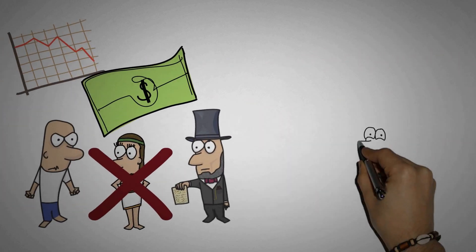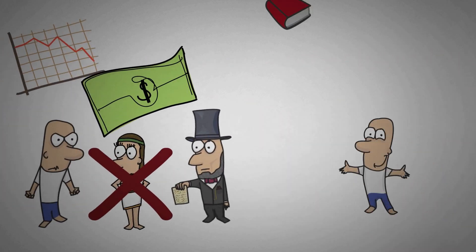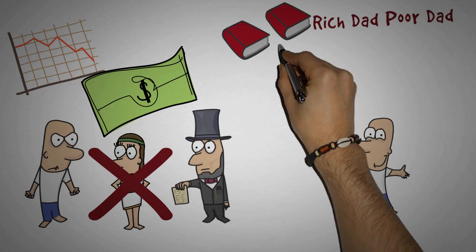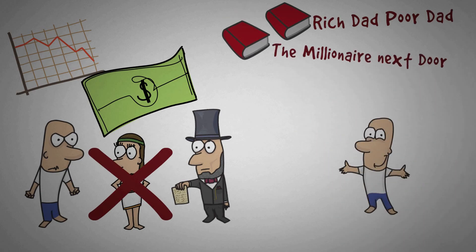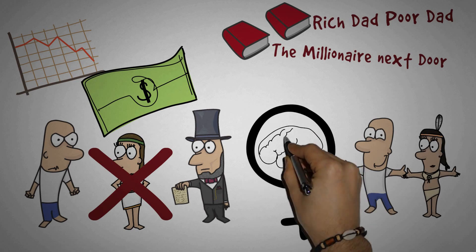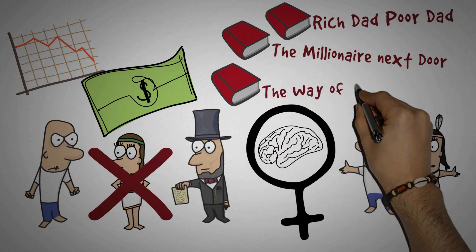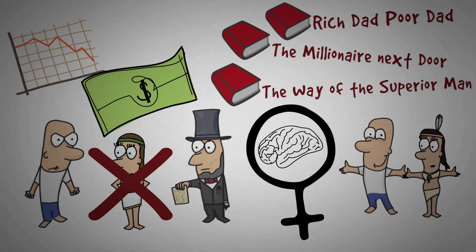If a proactive person goes into debt, he will start to read books like Rich Dad Poor Dad and The Millionaire Next Door to get out of debt quickly. And if a proactive person doesn't get laid, he will start to work on his confidence, learn more about female psychology, and read books like The Way of the Superior Man by David Deida.